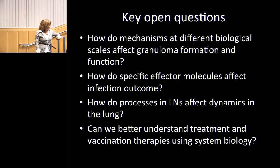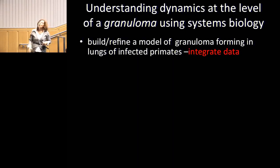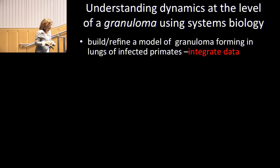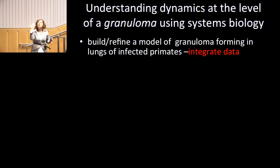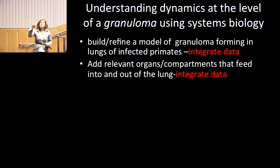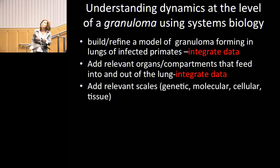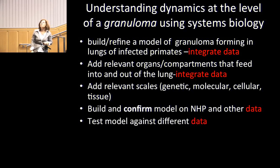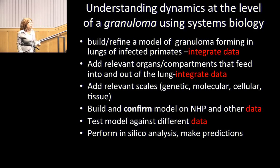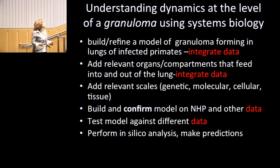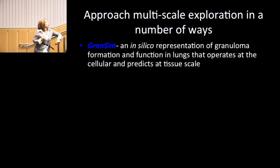Our questions include: how do mechanisms at different biological scales affect granuloma formation and function? How do specific effector molecules affect outcome? How do processes in a lymph node affect dynamics back in the lung? Can we better understand treatment and vaccination therapies using systems biology approaches? To do this, we build and refine models of granuloma formation. We work closely with our wet lab collaborator Joanne Flynn at University of Pittsburgh, who has the only BSL-3 facility for large animal non-human primates with imaging equipment in the world — a Bill Gates-funded lab.